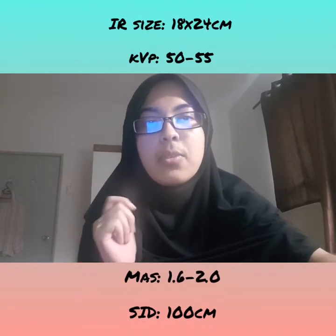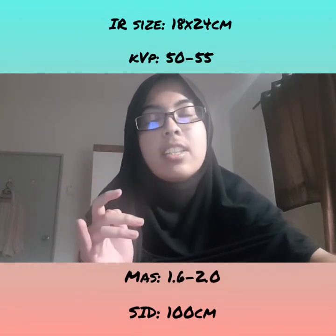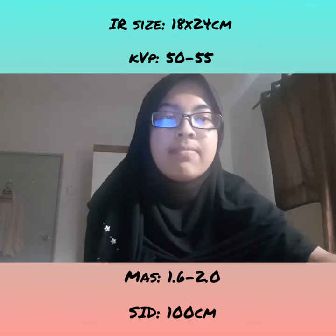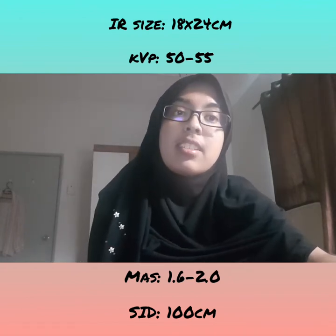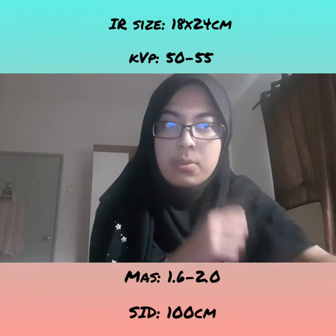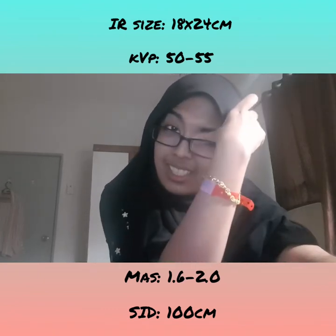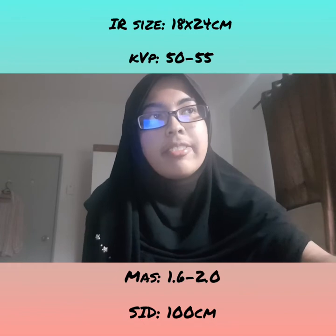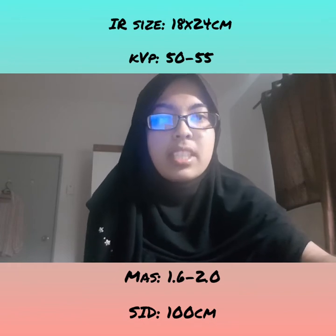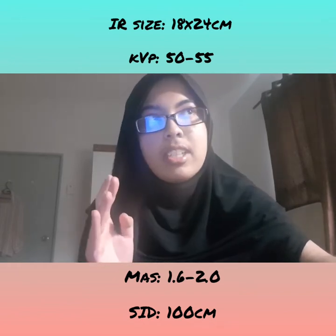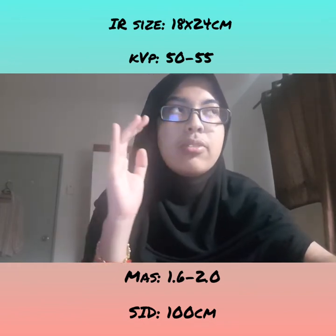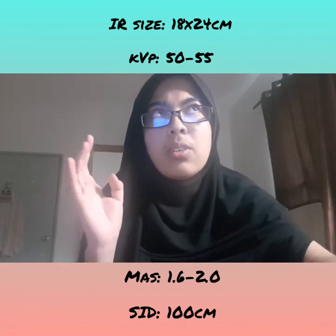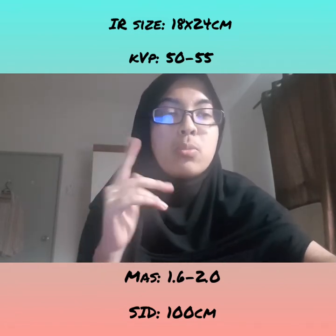The IR size we're going to be using is 18 x 24 cm. The SID will be 100 cm, and the technical factors would be a KVP of 50 to 55 and an MAS of 1.6 to 2.0.